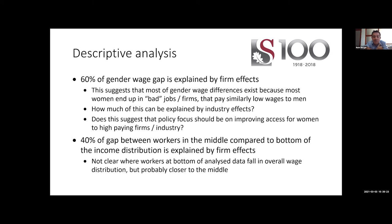A striking result: 60 percent of the gender wage gap is explained by firm effects. This suggests most gender wage differences exist because women end up in bad firms that also pay men similarly low wages. The discussant wonders how much of this is due to industry effects versus within-industry firm differences, and suggests a legal framework focusing solely on equal pay within a specific firm misses the bulk of why gender inequality exists.